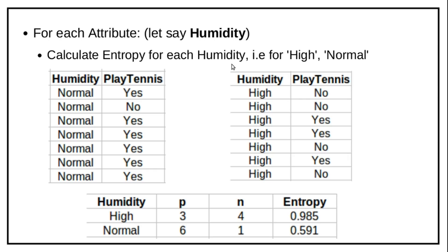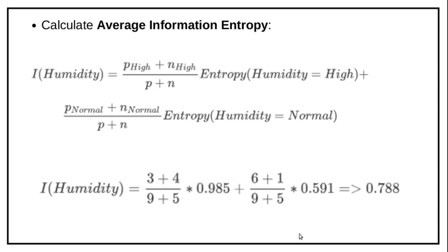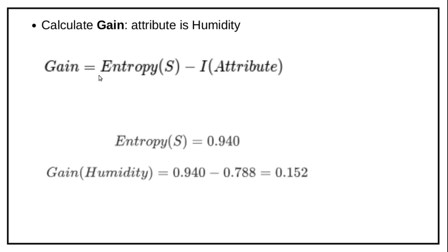The next attribute is humidity, which has two values: high and normal. For high, there are 3 positive and 4 negative examples. For normal, there are 6 positive and 1 negative example, so entropy there is 0.591. Calculate the average information entropy: (p_high + n_high)/(p+n) * entropy(high) + (p_normal + n_normal)/(p+n) * entropy(normal). Substituting the respective values gives 0.788, and the gain = 0.940 minus 0.788 = 0.152.